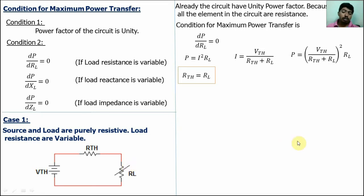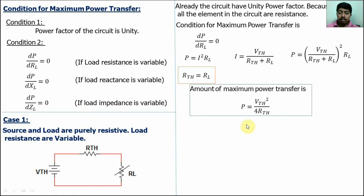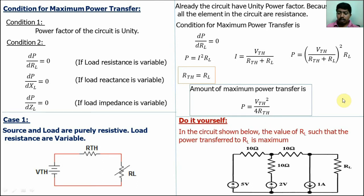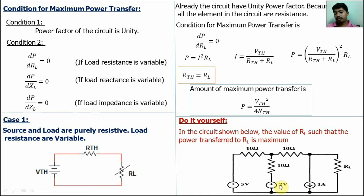To find the amount of maximum power transfer, substitute RTH for RL in the power equation. We get P equals VTH squared divided by (RTH plus RTH) squared times RTH, which simplifies to P_max equals VTH squared divided by 4·RTH. Now do it yourself — this question was asked in the GATE 2010 instrumentation examination. Here the circuit has a variable load resistance and a pure resistive source with multiple sources. First find the Thevenin resistance. No need to find VTH; when RTH equals RL, the power is maximum.